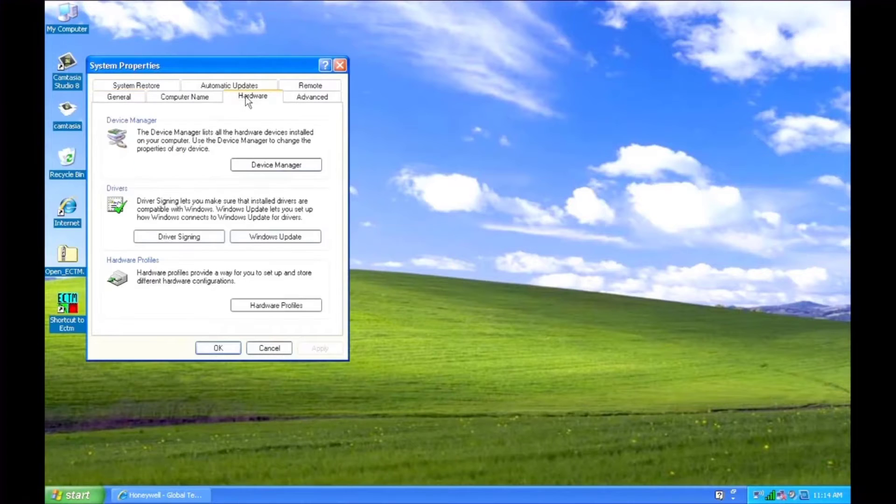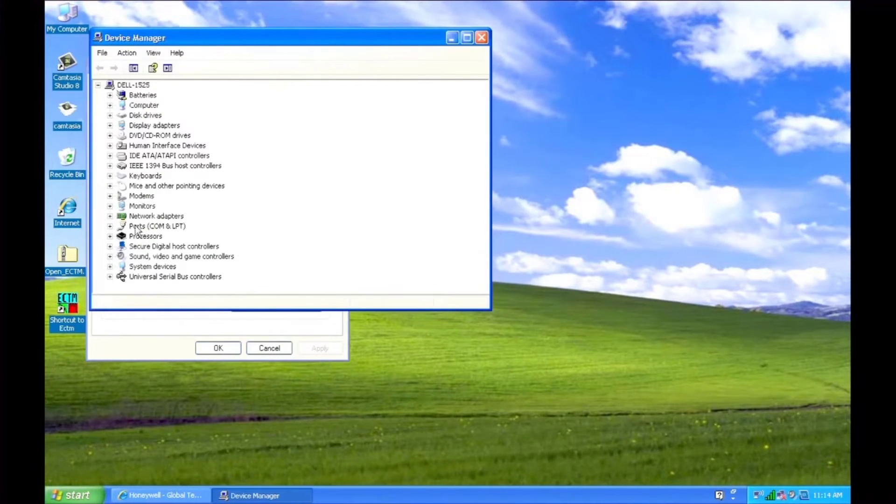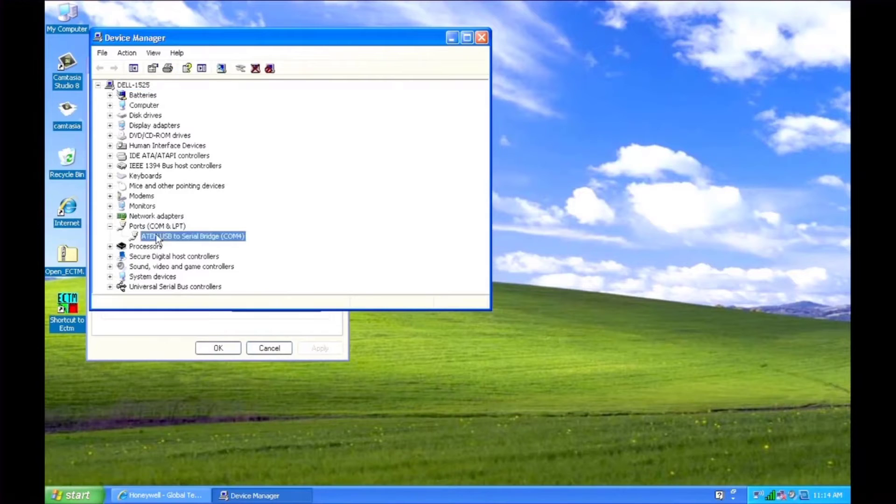Go to the device manager. Find USB to serial bridge and make a note on the COM port.